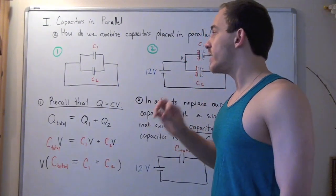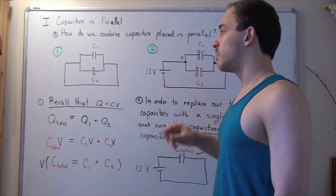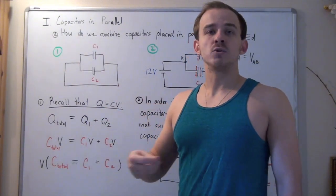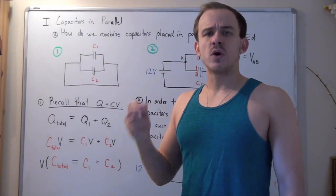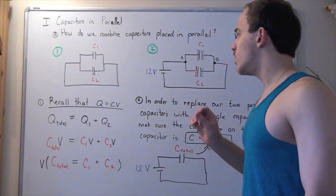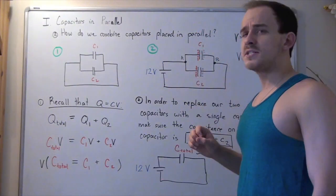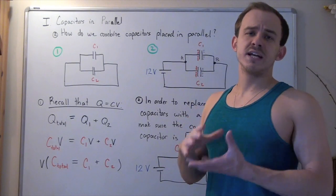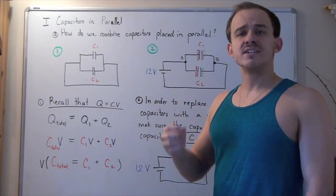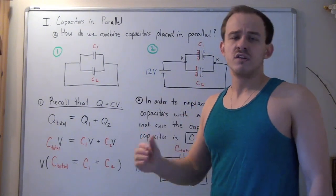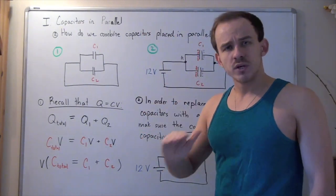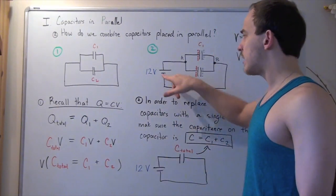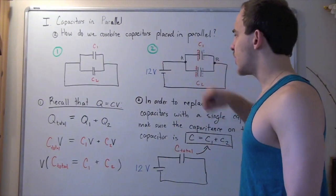Now let's explore what happens in electric circuit number two when we incorporate a 12-volt battery into our circuit. When we incorporate this battery, we now have an electric potential difference, and so electrons will tend to move from a higher electric potential to a lower electric potential — from our anode to our cathode.